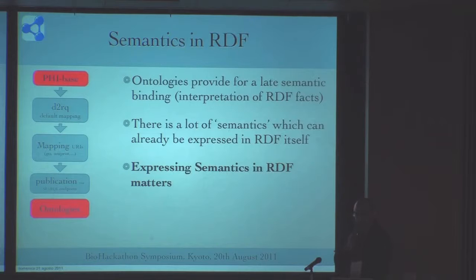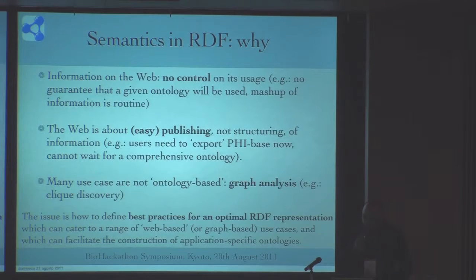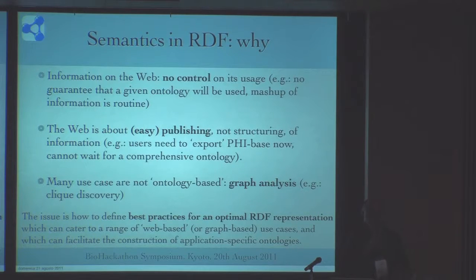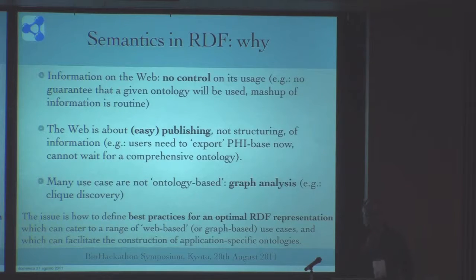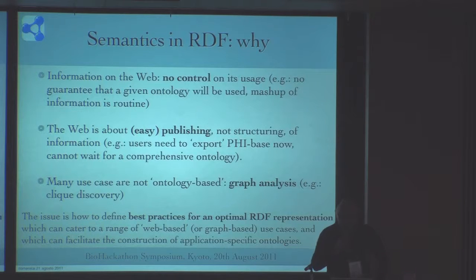I think this is something that matters for a set of reasons. One is that this information is on the web — we are exporting this information from PHI-base on the web, and there is actually no control of its usage. Some people will just take this RDF and mash it up with other information and just use it. So if you don't encode semantics in RDF, there is no guarantee that they will use our ontology or something. Another aspect is that the web is about easy publishing of information — this is a resource that needs to be exported to other users. We don't really have time to wait to define a comprehensive ontology; people want to export it now in RDF or XML.